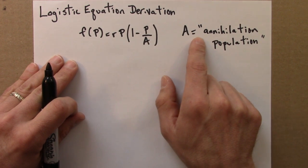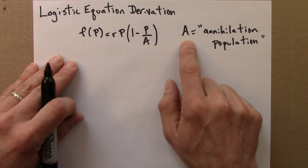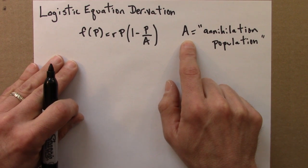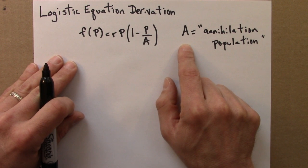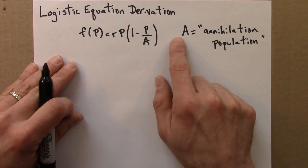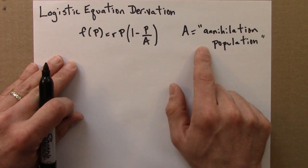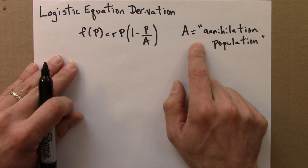So I've modified this equation by adding this term 1 minus p over a. The quantity a is known as an annihilation population. If the rabbits ever reach this population a, the next year there will be no rabbits. So this must be some level such that the rabbits would eat all their food or fight with each other so badly that the next year there will be no rabbits. You could also think of it as an apocalypse population.